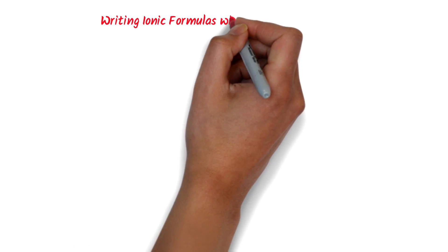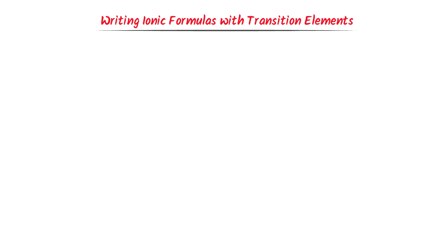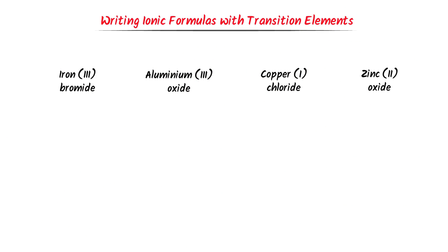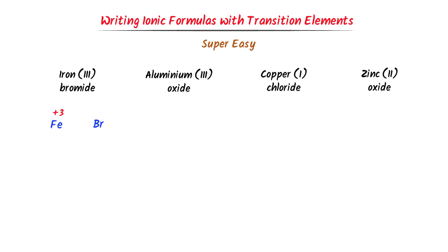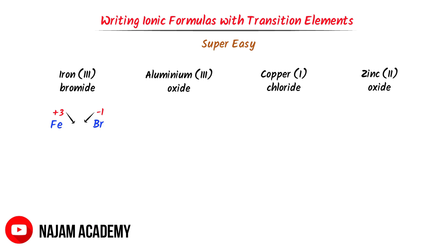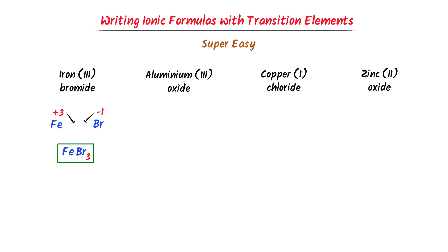Now let me teach you writing ionic formulas with transition elements. Remember that this is super easy. Iron(3) means the oxidation state of iron in this compound is positive 3. Bromine is present in group 7 with oxidation state negative 1. I cross their respective charges and I get FeBr₃. So this is the chemical formula of iron(III) bromide.